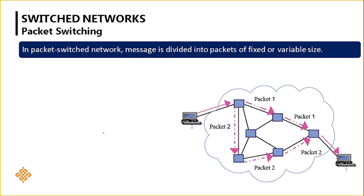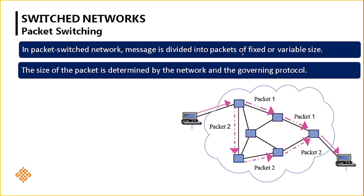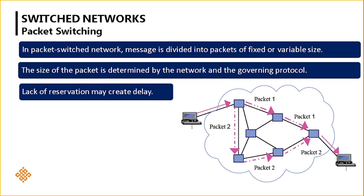Packet switching works in the data link and network layer. In packet switching, the message is divided into packets which are of fixed or variable size. This purely depends upon the maximum segment size of the next node. Based upon the receiving capacity of the next node, the packets will be divided either fixed or variable, and this size is determined by the network and the protocol based upon the MSS.